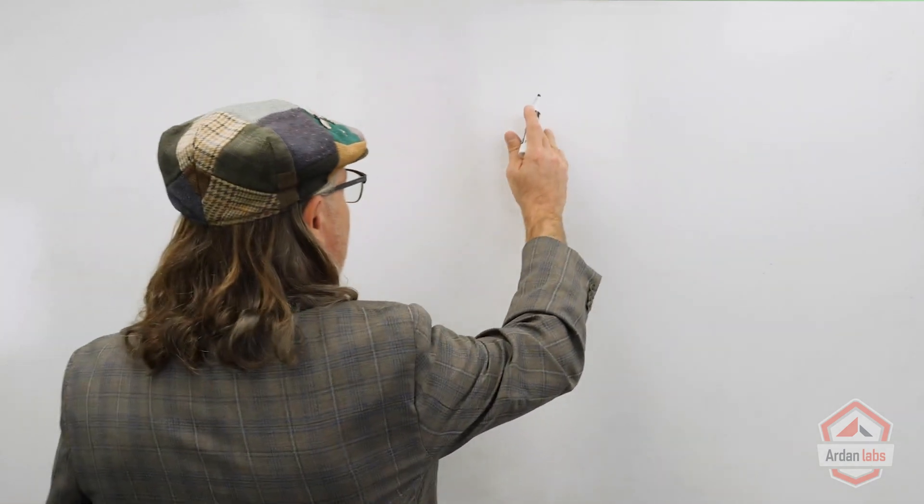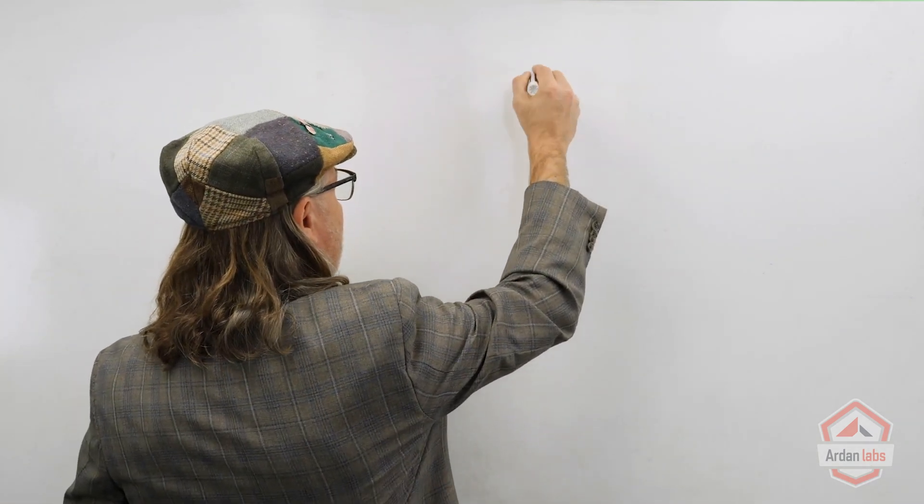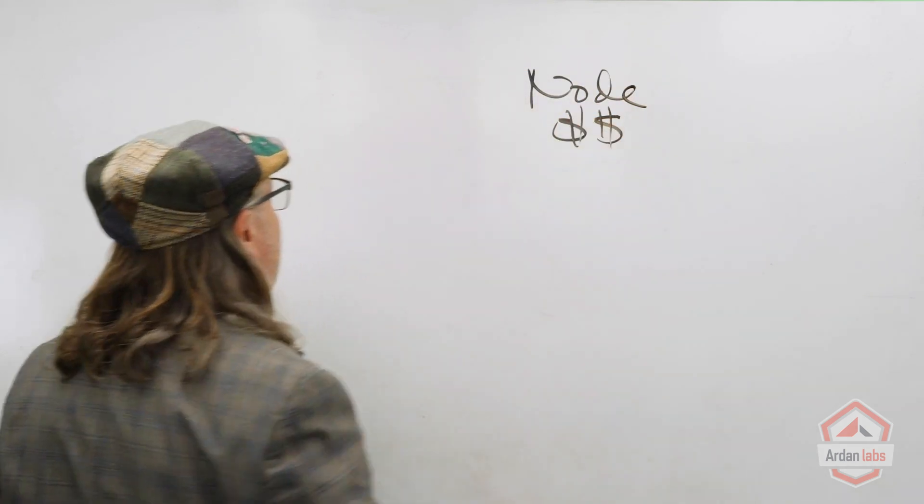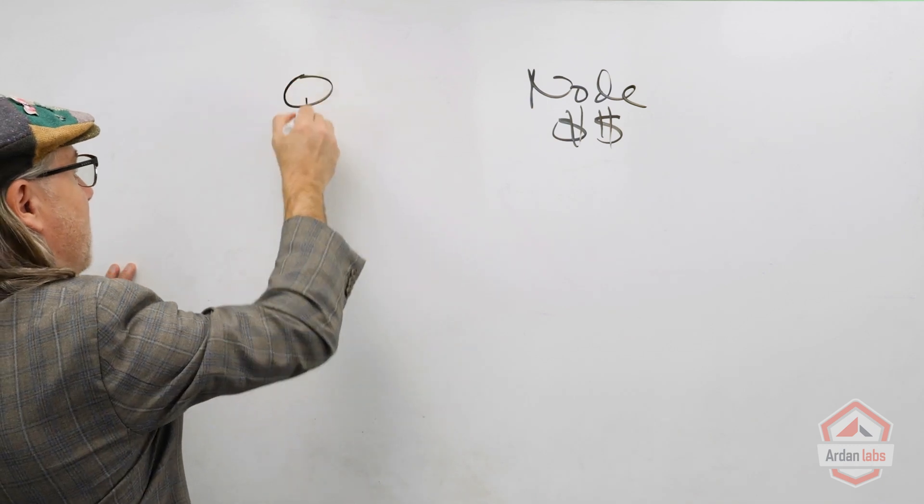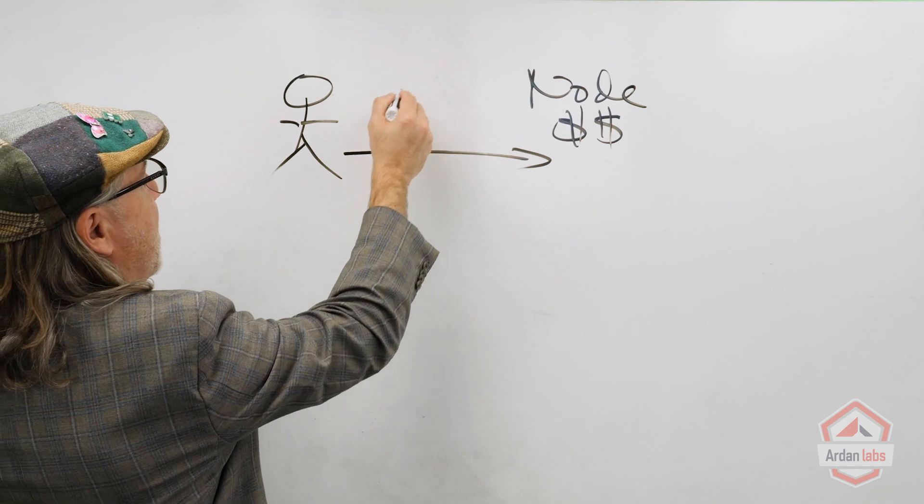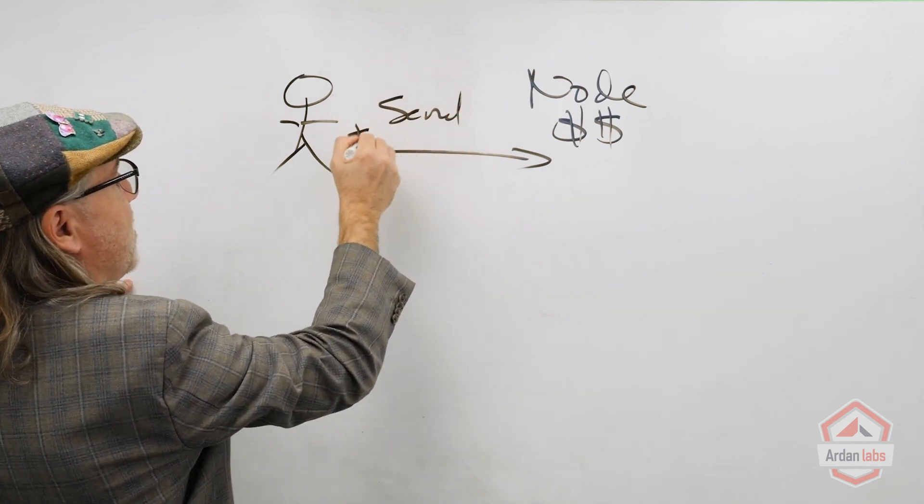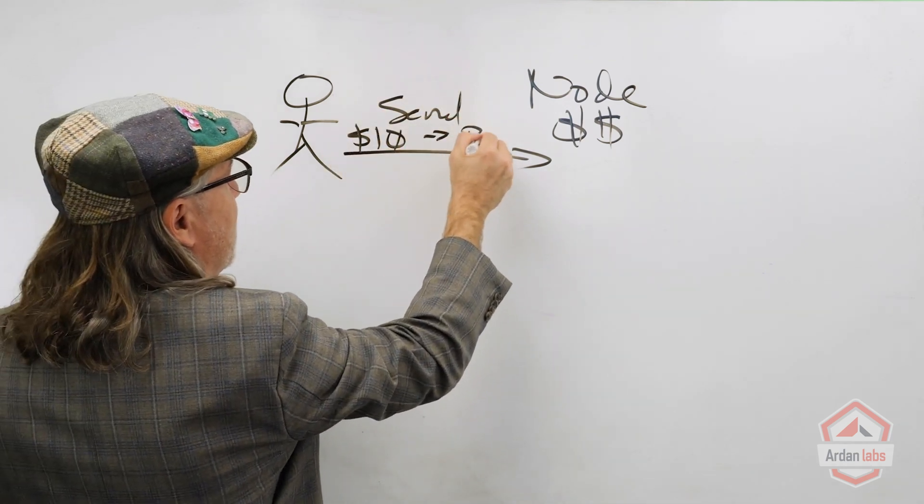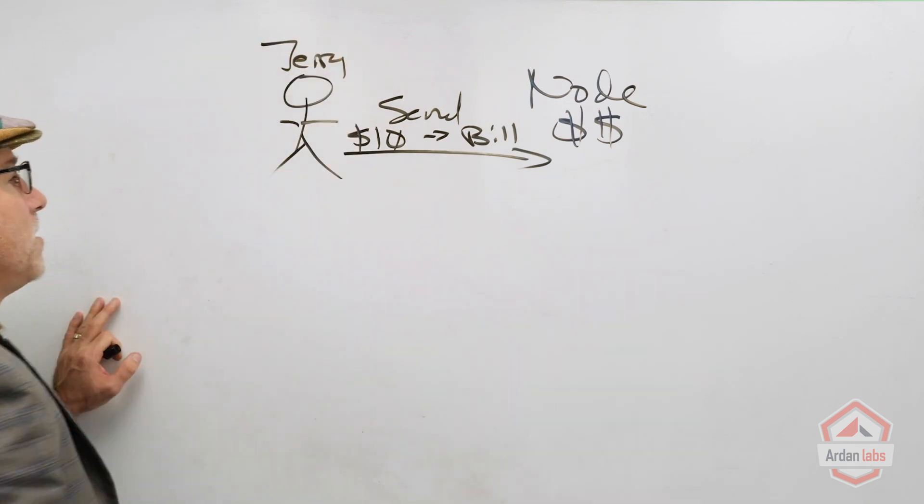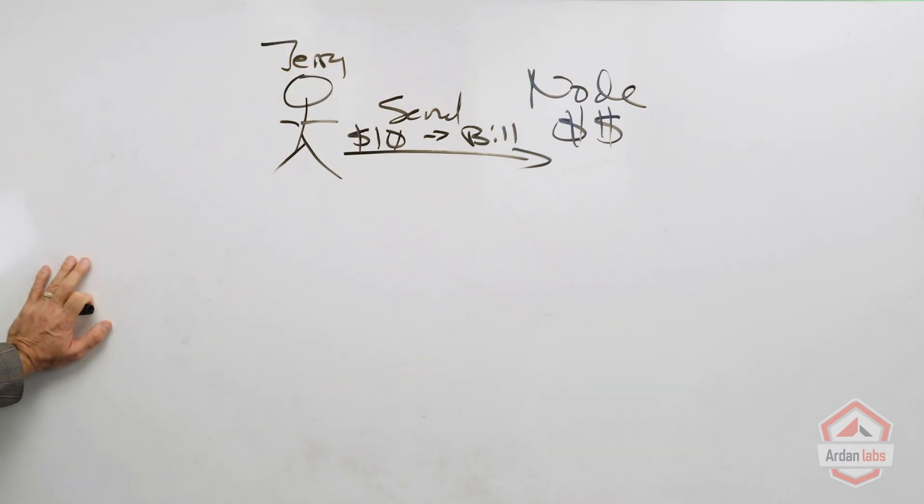Let's start with the problem. This is going to be our node here, our service managing money. We're going to have some person over here, and they're going to want to say something like, can you send ten dollars to Bill? Maybe this is Jerry, so Jerry says I want to send ten dollars to Bill based on the money that I have in my account.